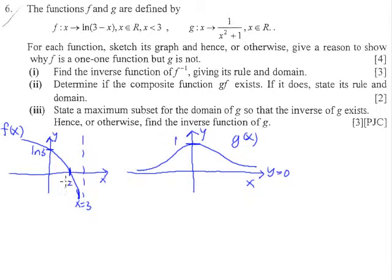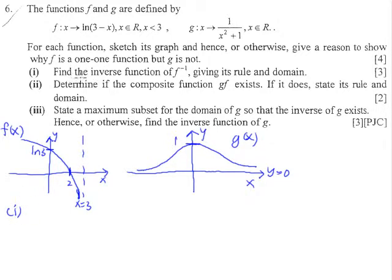It's obvious — f is one-to-one, g is not. That's why it's the 'hence' part, so since you already sketched, no problem. Now moving on to part 1: find the inverse function of f.